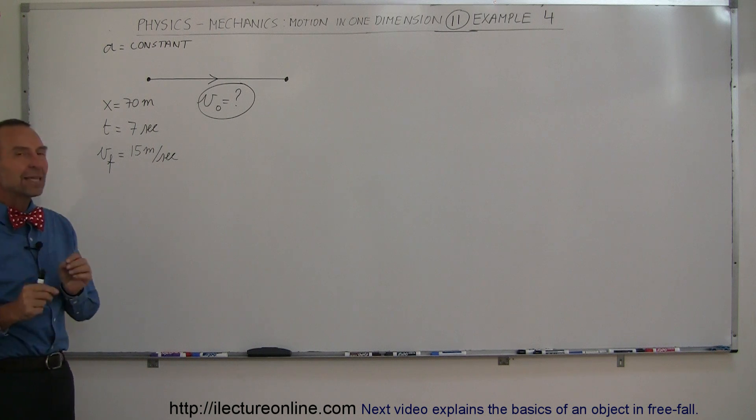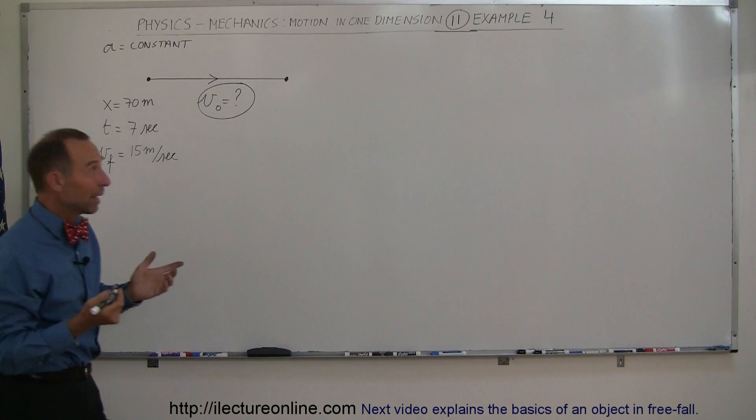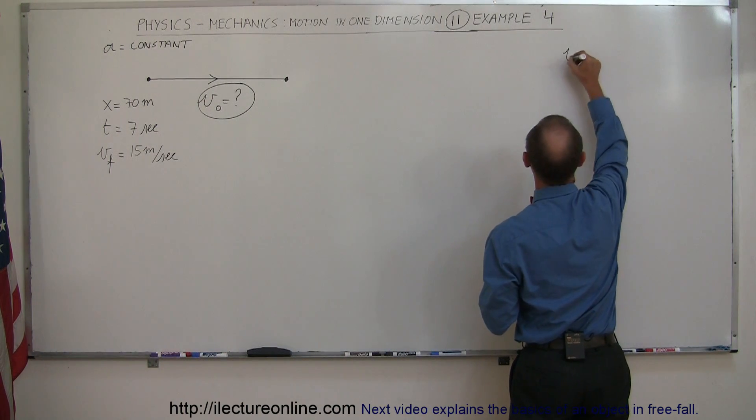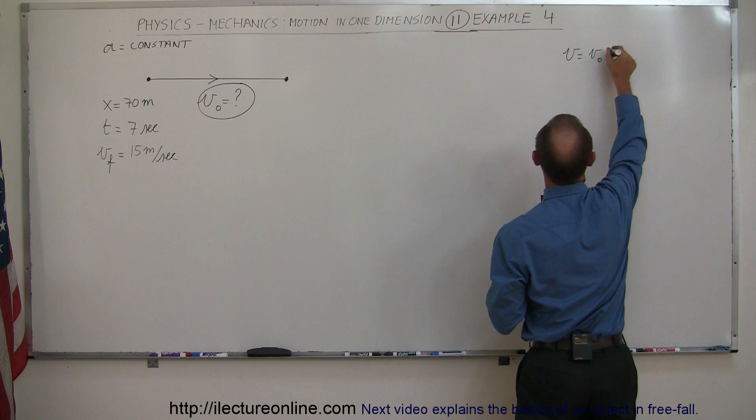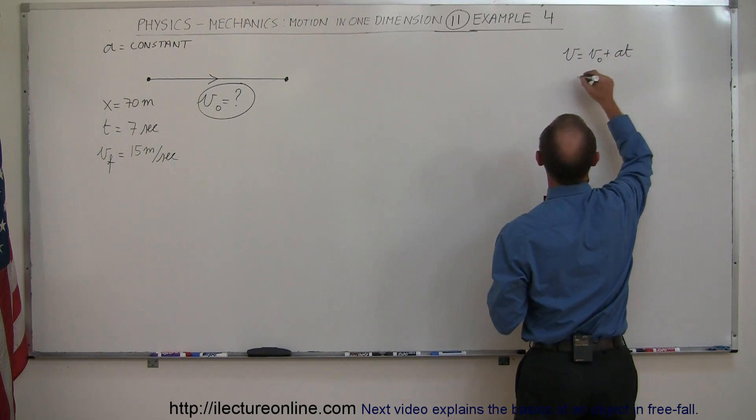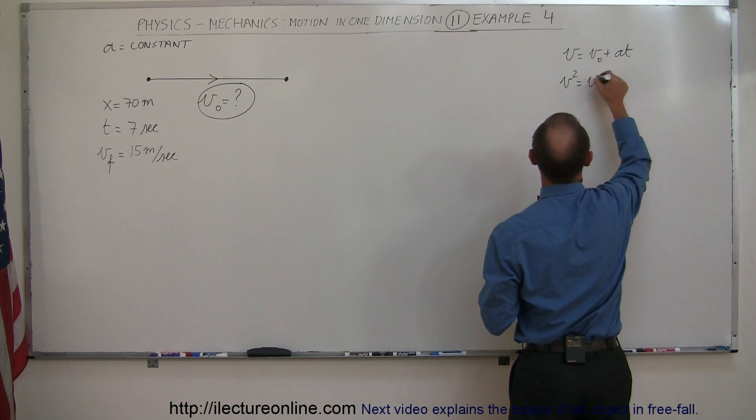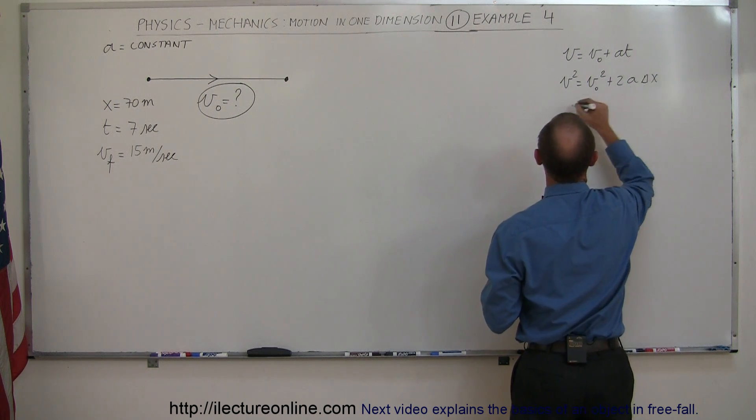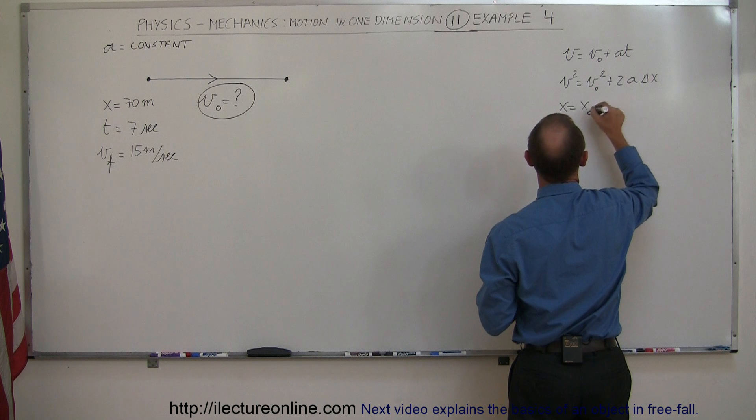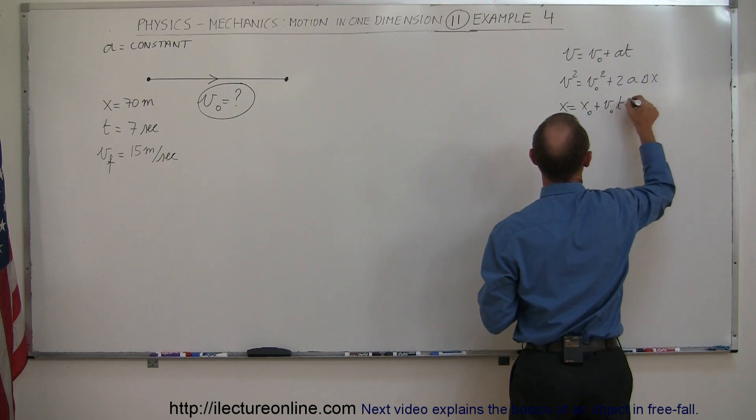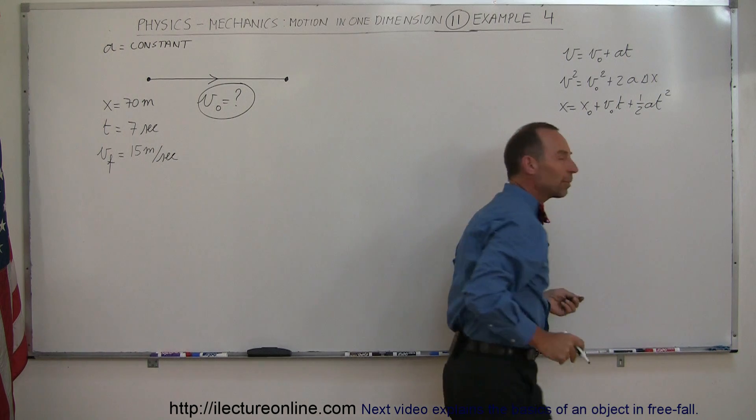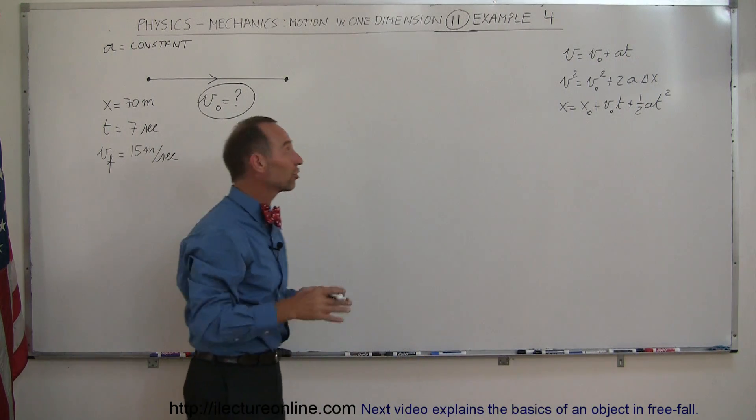It is tempting here to say, I need my three equations of kinematics, which is actually not a bad approach when you start any of these problems. V equals V initial plus A times T. V squared equals V initial squared plus 2A times delta X. Or X equals X sub naught plus V sub naught times T plus one-half A T squared. With some combination of these equations, you'll be able to solve this problem.